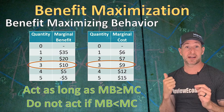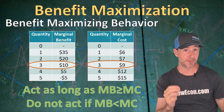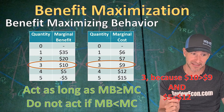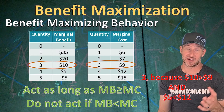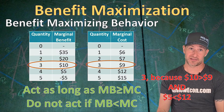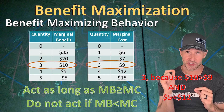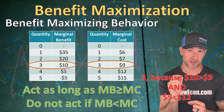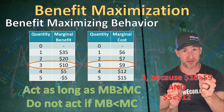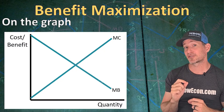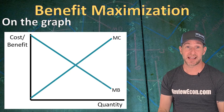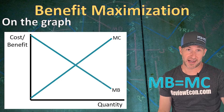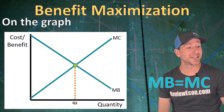If these tables were on an exam and you had to identify the benefit-maximizing number of hours, you would say three because $10 is greater than $9 and $5 is less than $12. On exams when doing marginal analysis, the explain point requires that you say why you are choosing the unit you are choosing and why you are not choosing the follow-up unit. On the graph where marginal benefit and marginal cost are graphed together, the benefit-maximizing quantity is found where the two curves intersect at Q1.